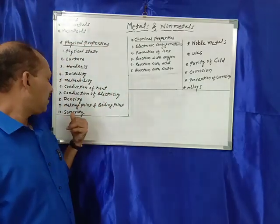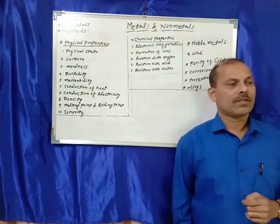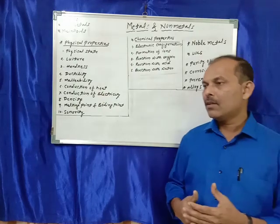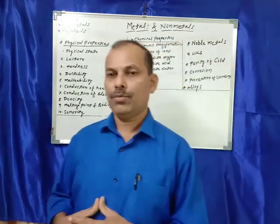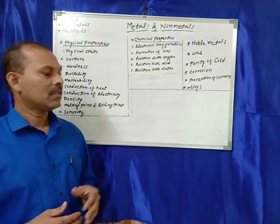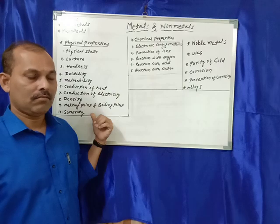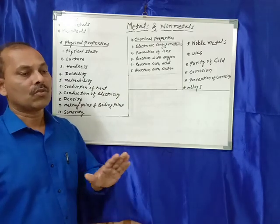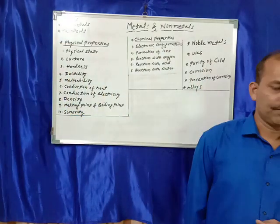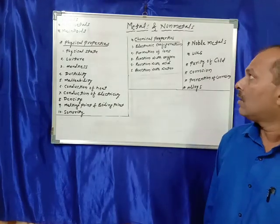Then sonority: metals are sonorous. If you strike a metal, then sound is produced. Metals are sonorous — they produce sound after striking. But non-metals are non-sonorous — they cannot produce sound by striking on them. These are the physical properties of metals and non-metals.